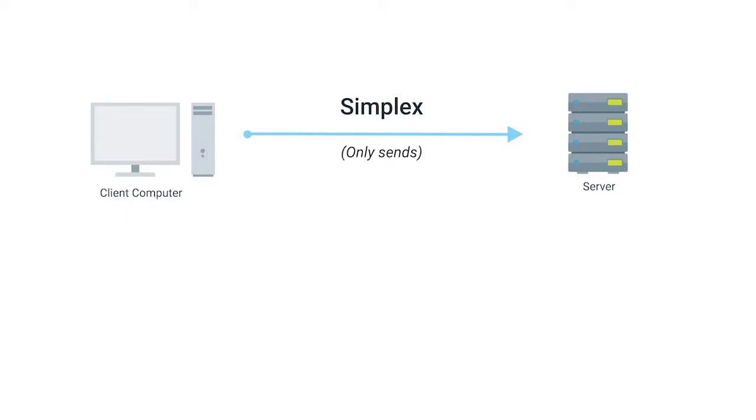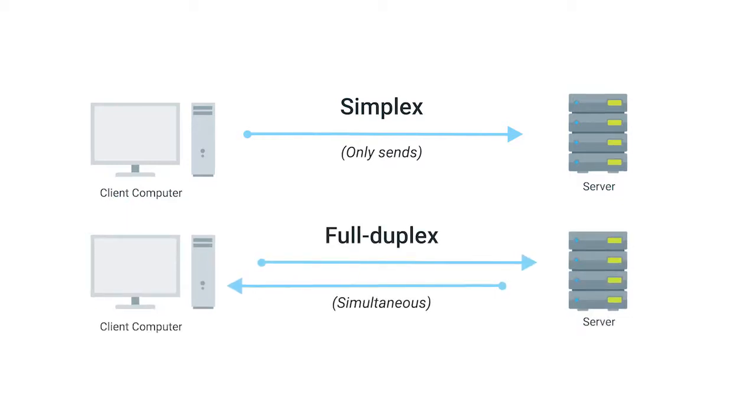A phone call is duplex since both parties can listen and speak. The way networking cables ensure that duplex communication is possible is by reserving one or two pairs for communicating in one direction, then using the other one or two pairs for communicating in the other direction.